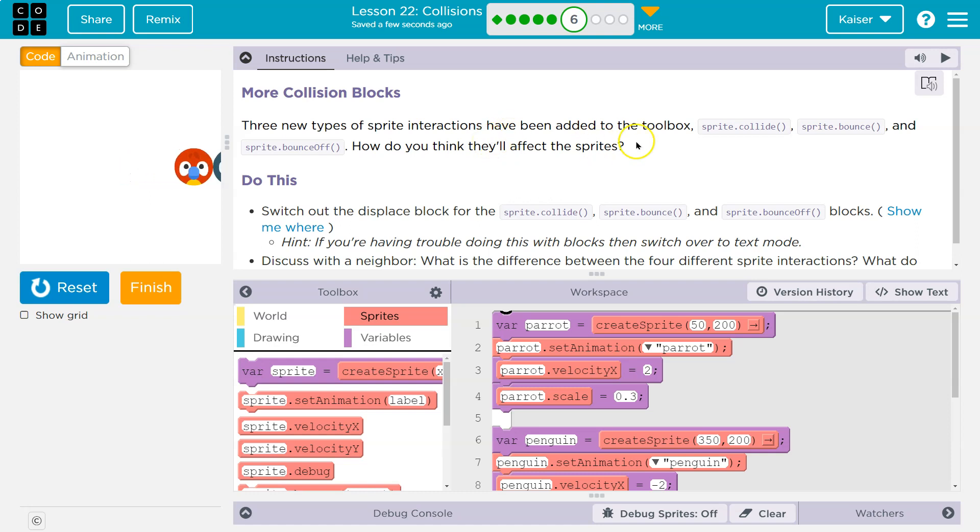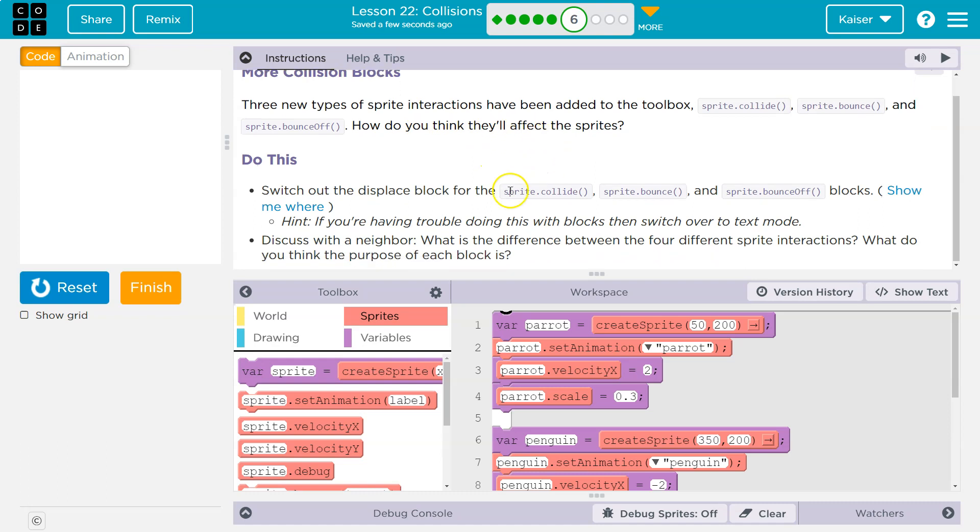Three new types of sprite interactions have been added to the toolbox. Sprite.collide, sprite.bounce, and sprite.bounceoff. So these are methods within a class. More on that later. But they will cause these interactions with their sprite. How do you think they'll affect the sprites?